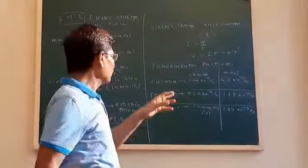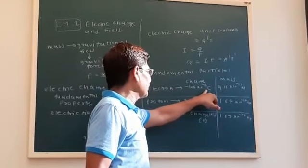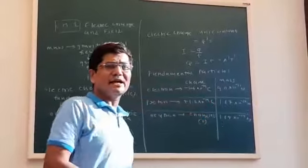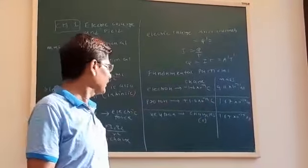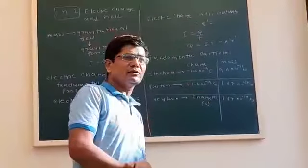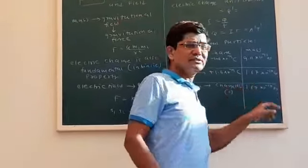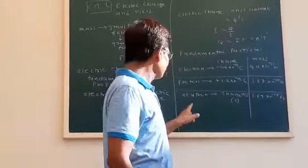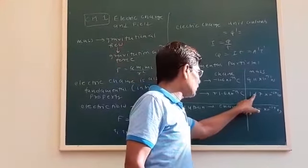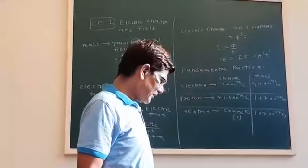We have to see about the fundamental particles. Electron charge is minus 1.6 × 10⁻¹⁹ Coulomb, and mass is 9.11 × 10⁻³¹ kg. Proton charge is plus 1.6 × 10⁻¹⁹ Coulomb, and mass is 1.67 × 10⁻²⁷ kg. Neutron is a chargeless particle, with mass similar to that of the proton: 1.67 × 10⁻²⁷ kg.